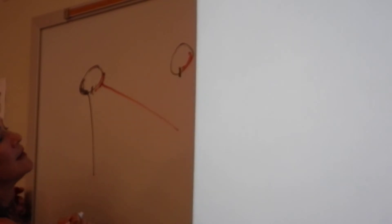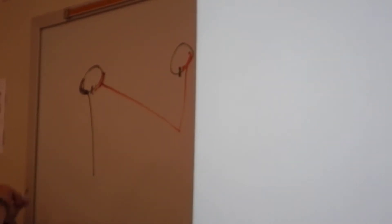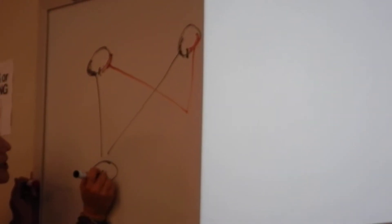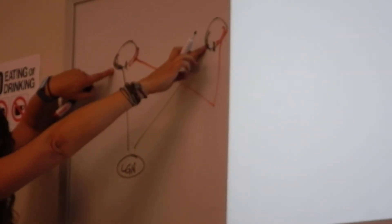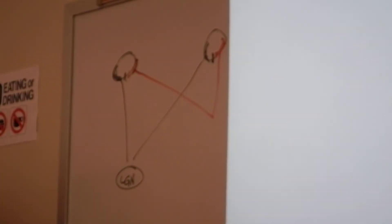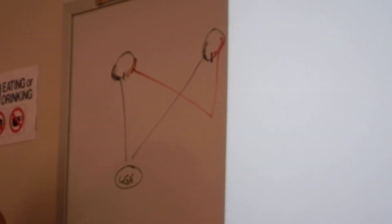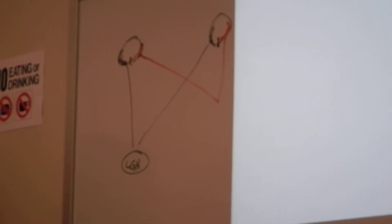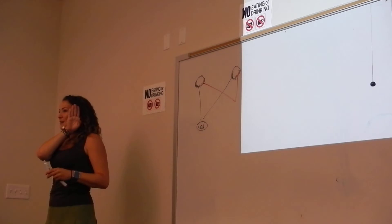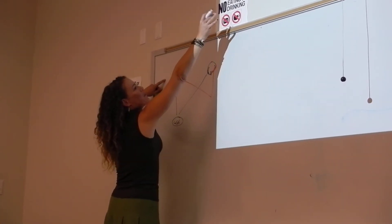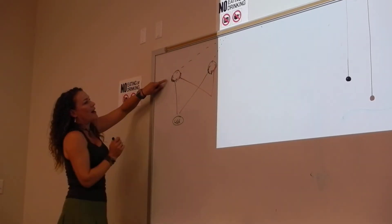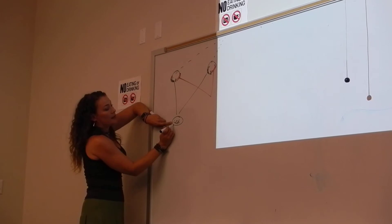So over here, the temporal hemiretina stays ipsilateral and the nasal hemiretina crosses over. So at the level of the lateral geniculate nucleus, you've got information from both eyes, but only the information from the right side of the world. If I wave my hand over here, that's falling on the nasal hemiretina of this side and the temporal hemiretina of this side, and that is going to be processed at the lateral geniculate nucleus.